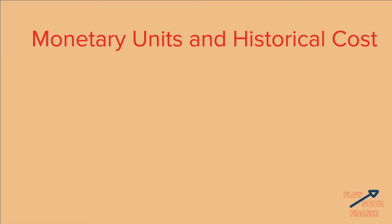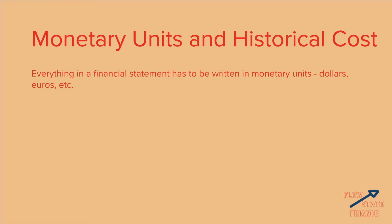The first principle is monetary units and historical cost. Monetary units means that everything in a financial statement has to be written in some sort of monetary unit — so dollars, euros, etc. Basically, you can't say you sold 600 grams worth of gold worth of apples this year. This is one of the ways GAAP standardizes everything, because currency is in and of itself a form of standardization.